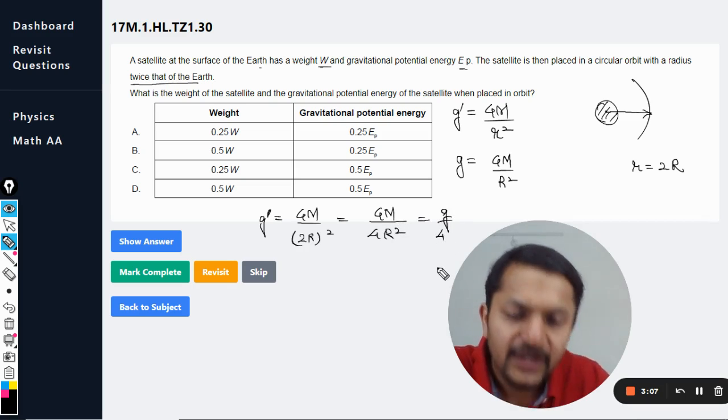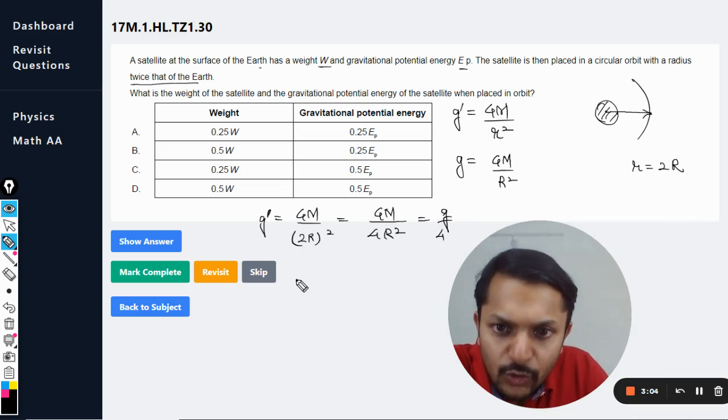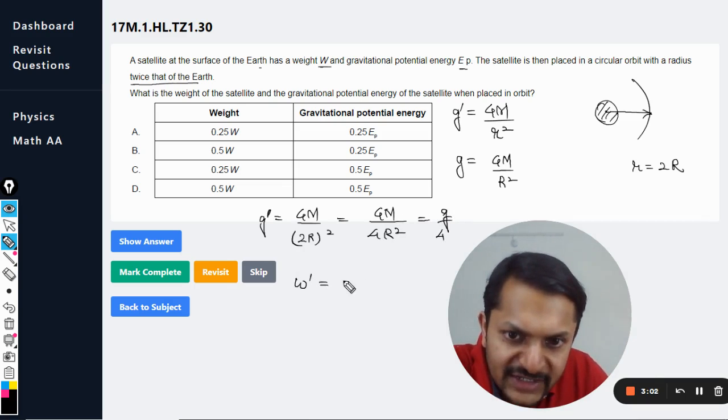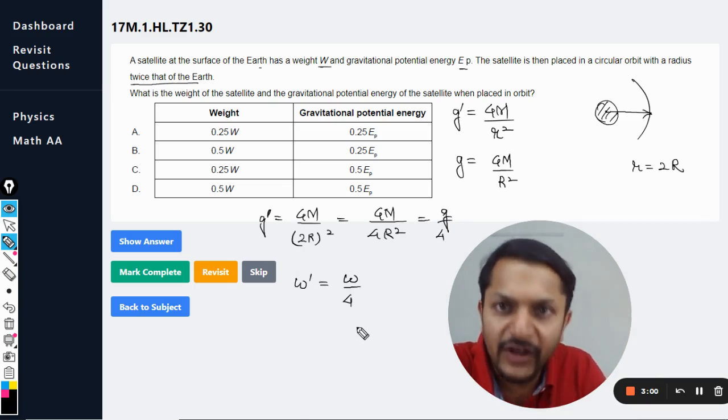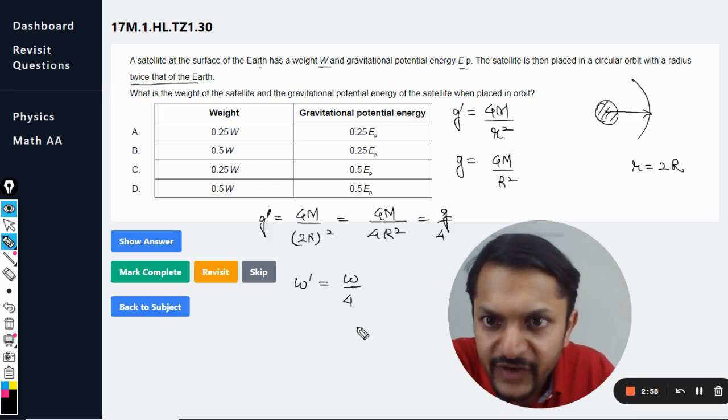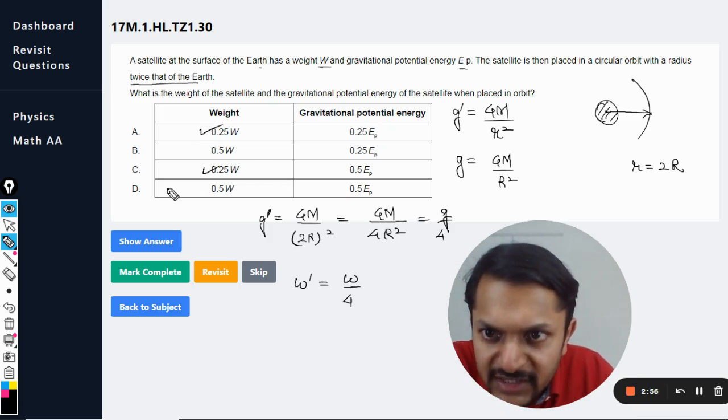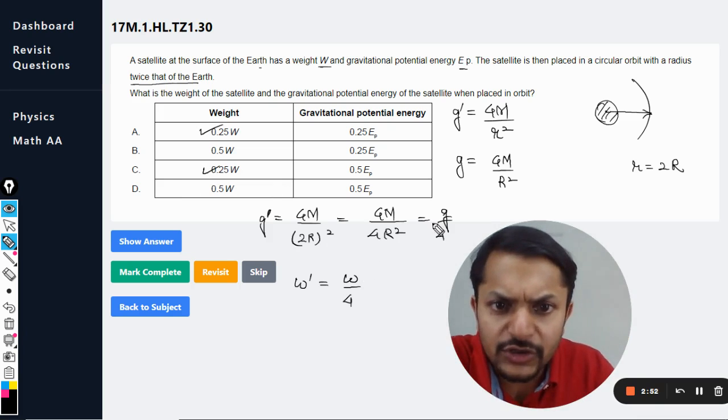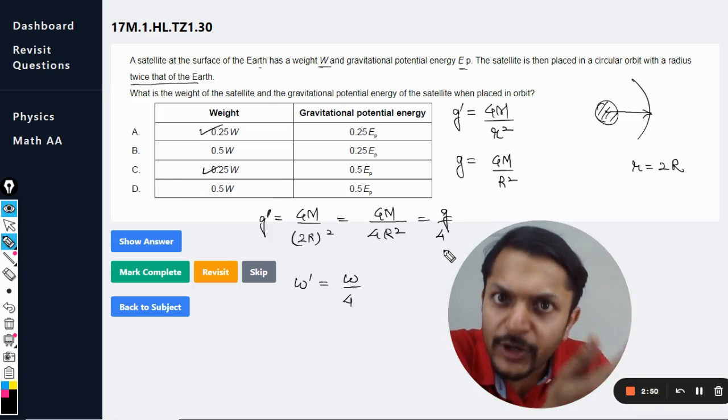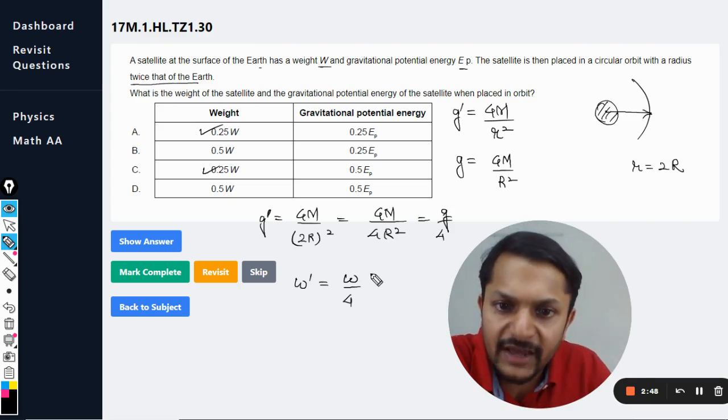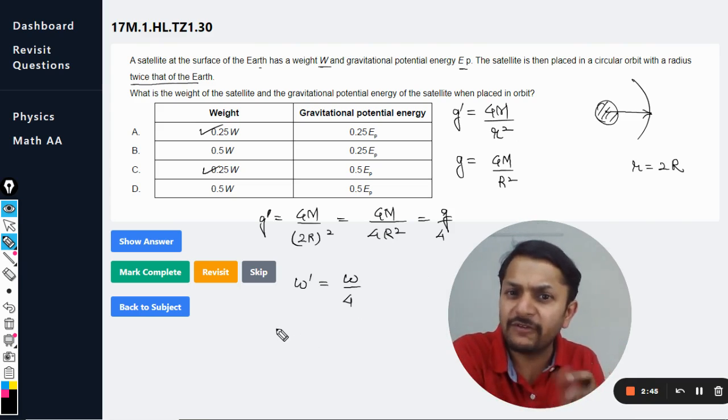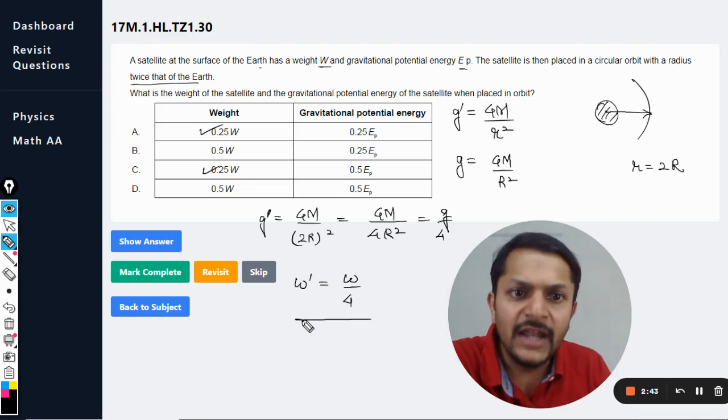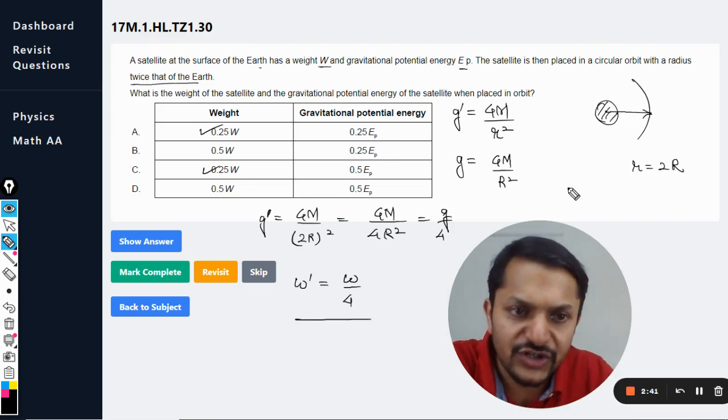This can be written as g divided by 4. Mass is not going to change. It only means that the new weight is just one fourth of the previous weight. So the answer should be either A or C. So it would be 0.25 of W, isn't it? Because gravity is now 0.25 times the initial gravity and weight is mg. I hope you understand what I have done.